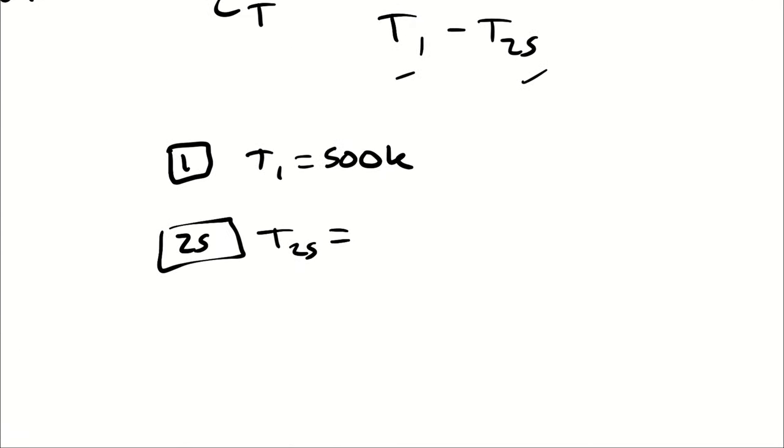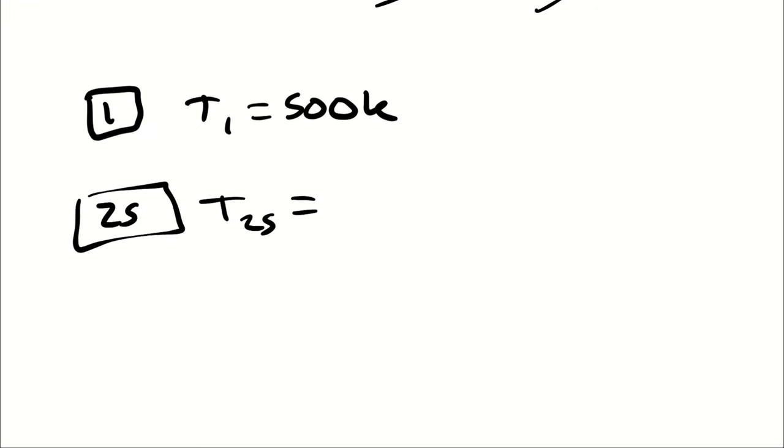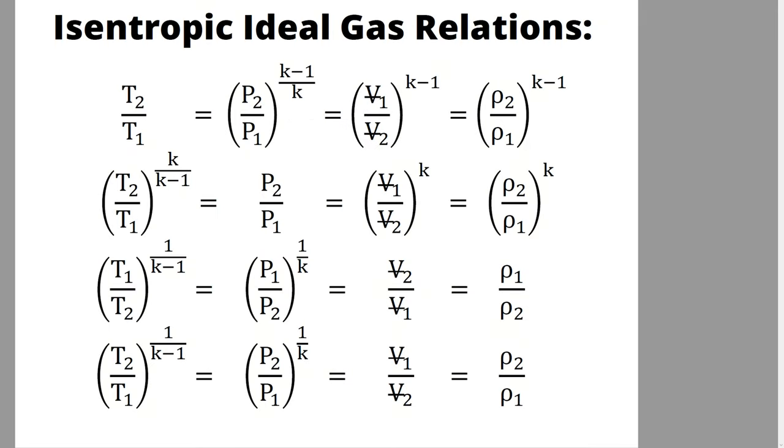So in the hypothetical analysis, from 1 to what the ideal output would be, I have an isentropic process. Therefore, I can use any of these equations. The one that is going to be most useful is the one in the upper left-hand corner. So I'm going to say T2S divided by T1 is equal to P2S over P1 raised to the K minus 1 over K.